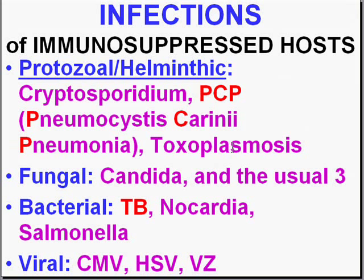Fungi are also notorious for infecting immunosuppressed hosts. Besides Candida, which is very common in any immunosuppressed person and diabetics — probably the biggest category — the three deep systemic fungi: Histoplasma, Blastomyces, and Coccidioides are very commonly seen in immunosuppressed patients as deep systemic infections.